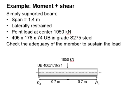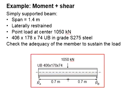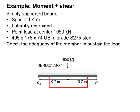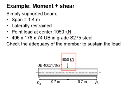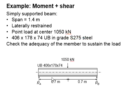Let us try an example to design a beam subjected to moment and shear. This is a simply supported beam with a span of 1.4 meters. It is laterally restrained. There is a point load at the mid-span of 1050 kilonewtons. The beam is made of a UB406×178×74 section. The steel grade is S275. Check the adequacy of the member to sustain the load.